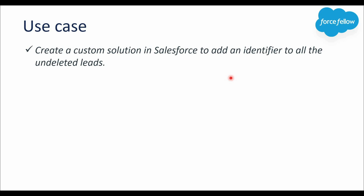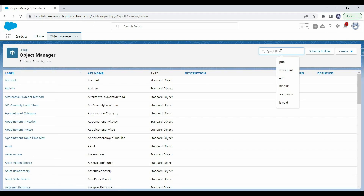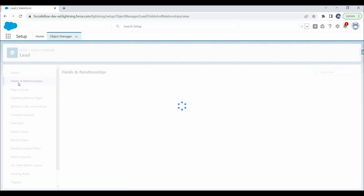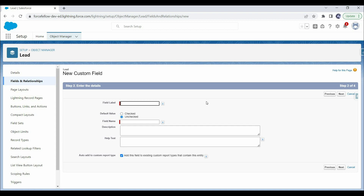Record-triggered flows don't support undelete operations. Now, before moving into practical implementation, let's look at some prerequisites. First, we need to create a new custom field. To add an identifier to undeleted lead records, we'll create a custom field on the Lead object with the name isRestored. In this field, we'll store true or false — if the record is restored, then true, else false. So we'll select Checkbox as the data type.